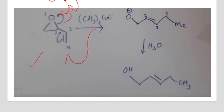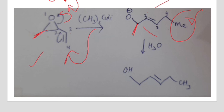The Gilman reagent methyl will attach on this carbon position, and the bond will shift between carbon number 2 and carbon number 3. Then we apply hydrolysis: H⁺ attacks on the oxygen which has a negative charge, and it forms an OH group, which is the final product.